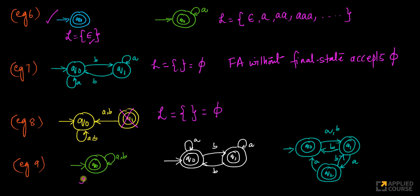What is the language accepted by this machine? I start here. My initial state is also my final state. Whether you give me any input with a or b, I'll stay here. So the language accepted by this is sigma star — every string you can construct with a and b, including the empty string, is accepted. The language accepted by this is sigma star, the universal language itself.